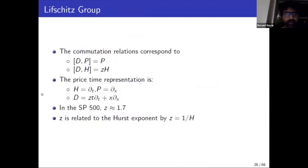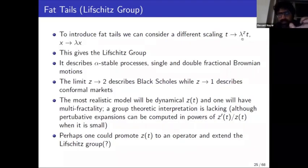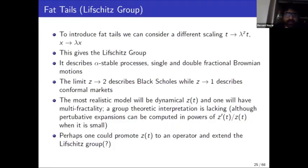The most general kind of scaling is where time and price scale differently. If you set time to λ^z times time and price to λ times price, you get an invariance where z is arbitrary. z equals two describes Black-Scholes, z equals one describes conformal markets corresponding to crashes. The most realistic model for equity market data is when z is dynamical and changes rapidly, or at least when z is fixed we get the Lifshitz group.